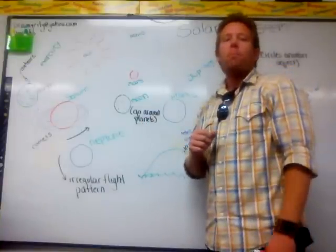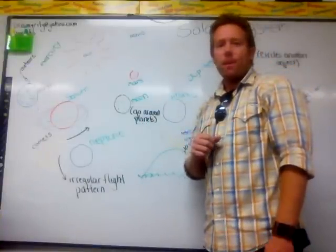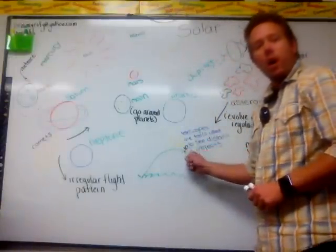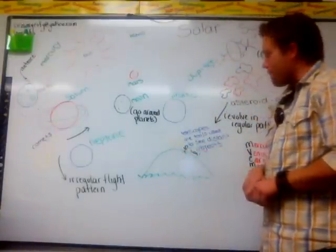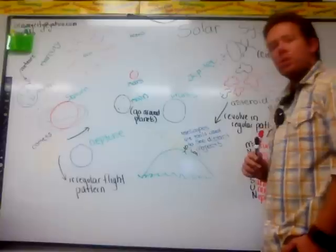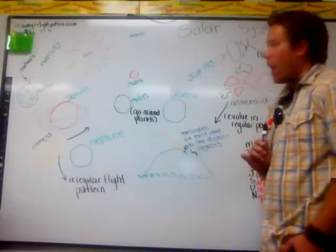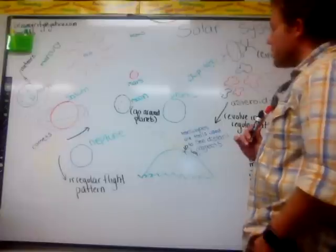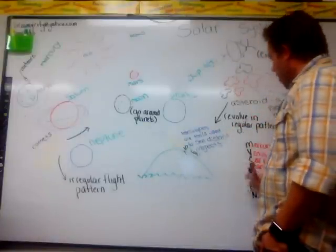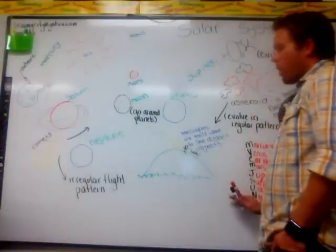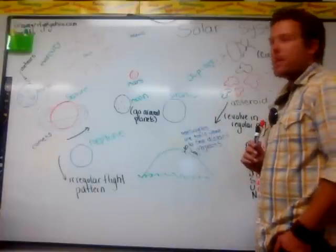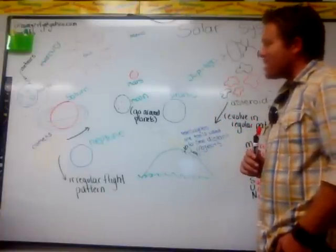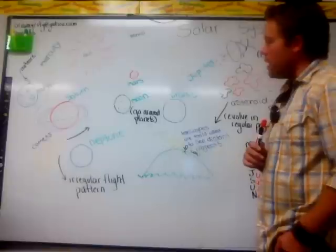Telescopes are tools used to see distant objects. So to recap, for the test you need to know all the planets and their order, as well as key vocabulary terms: asteroids, comets, telescopes, and meteors.